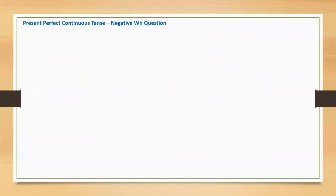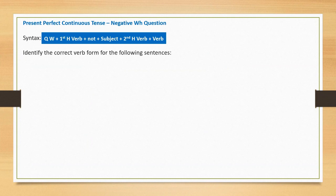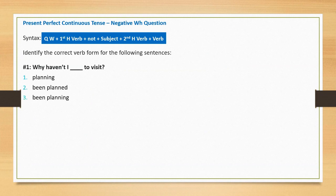Present perfect continuous negative WH question syntax: it starts with a question word or phrase, followed by the short form of the first helping verb and 'not', subject, second helping verb, and main verb. Sentence one: 'Why haven't I blank to visit?' Option one: planning. Option two: been planned. Option three: been planning. Correct option: been planning.